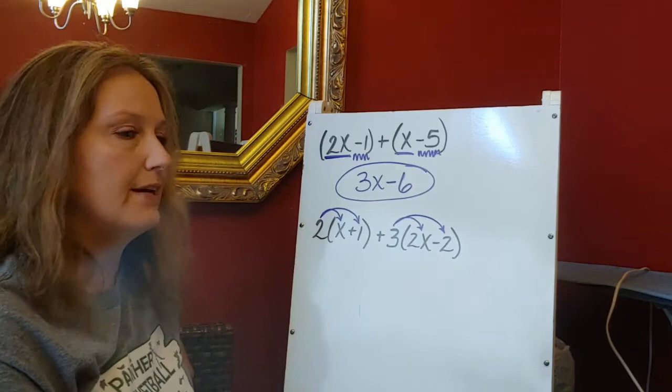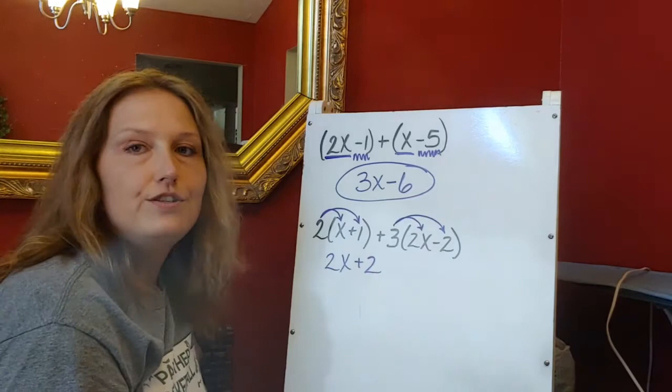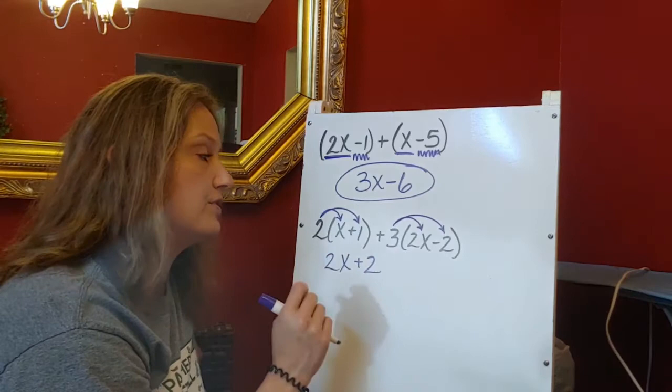I'm going to distribute first thing. I'm going to distribute here, that's my first step. Distributing 2 times x gives me a 2x, 2 times 1 gives me plus 2. So distributing that 2 through that first set of parentheses gives me a 2x plus 2.